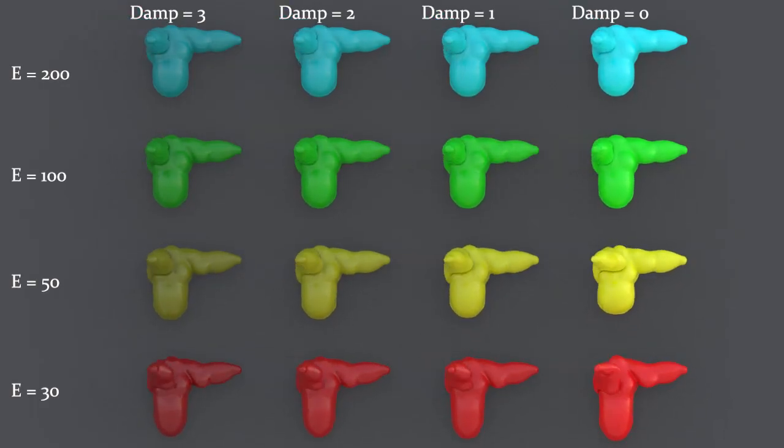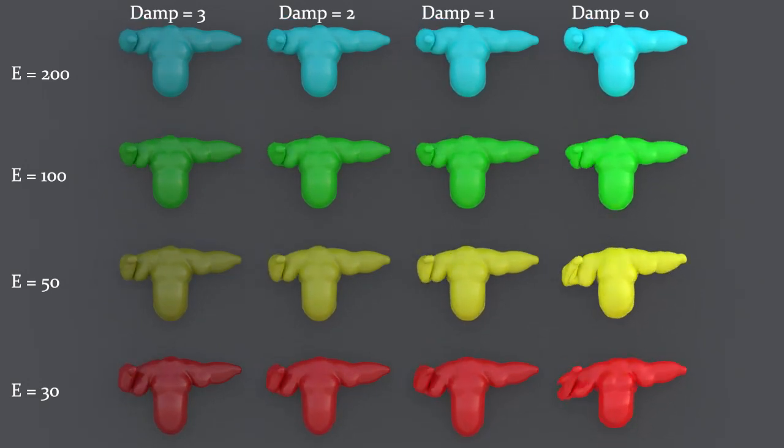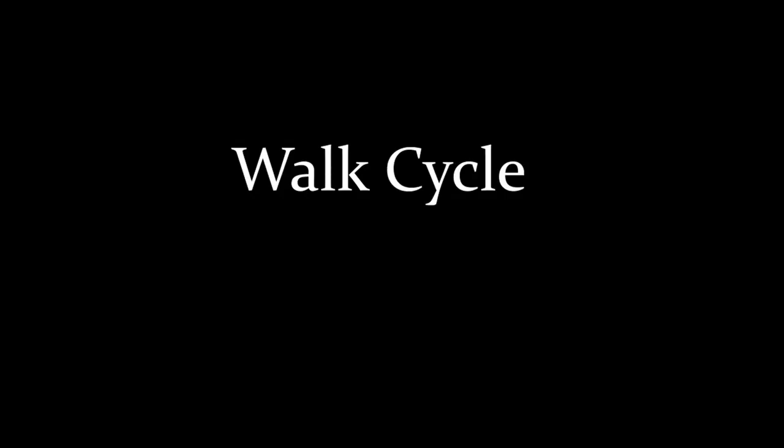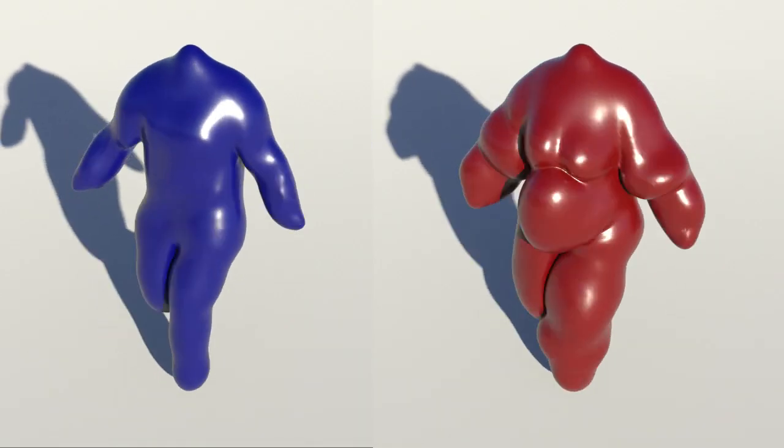We show skinning simulated using our method. The dynamics change with decreasing RPIC damping effects from left to right and decreasing stiffness from top to bottom. We also set up two walk cycle examples using our skinning method.